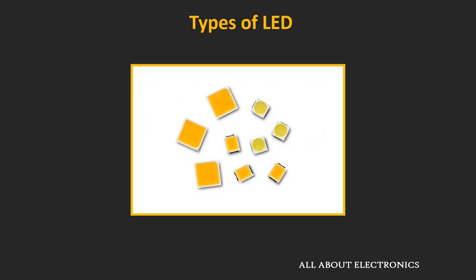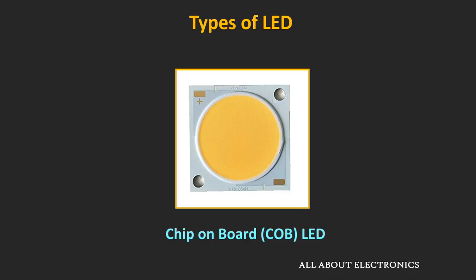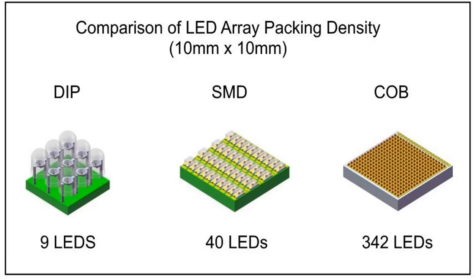If we talk in terms of power, then there are high power LEDs. These LEDs can handle much more current than the normal LEDs, and therefore they are much brighter than the normal LEDs. But because of their large power dissipation, they are always used with heat sinks. Then the other type of LED is the COB LED, which is known as the chip-on-board LED. It is very similar to the SMD LED, but here so many tiny LEDs are installed on the same chip, and hence it is much brighter than the other types of LEDs.